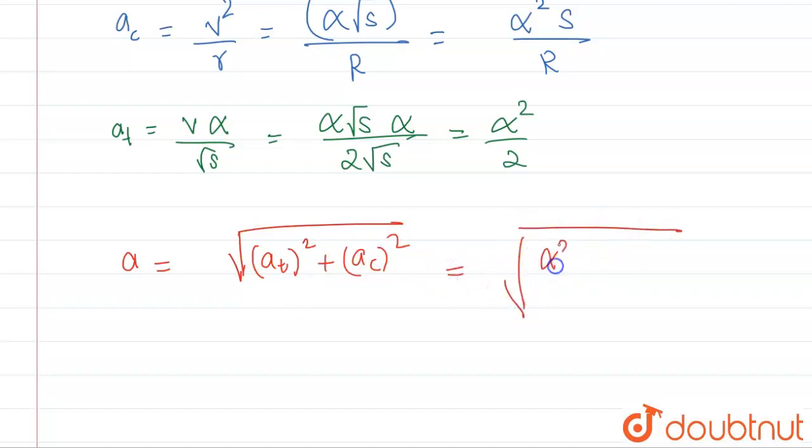This will be square root of alpha squared by 2, squared again, plus alpha squared s by r, whole squared.